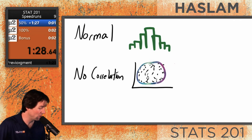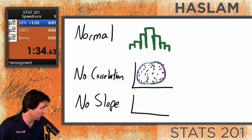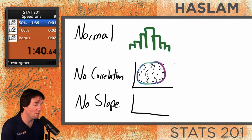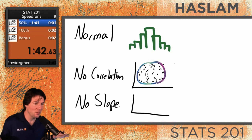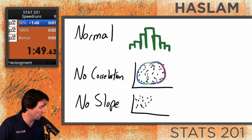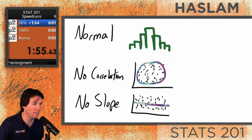What would we expect to see if there's no slope? This is the null we're starting out with — the null being that there's no slope. If there's no slope, what do I expect to see when I draw it? A straight line. I expect to see a straight line. We're going to add in a flat line which has no slope, and that's what I expect to see if there's no slope.